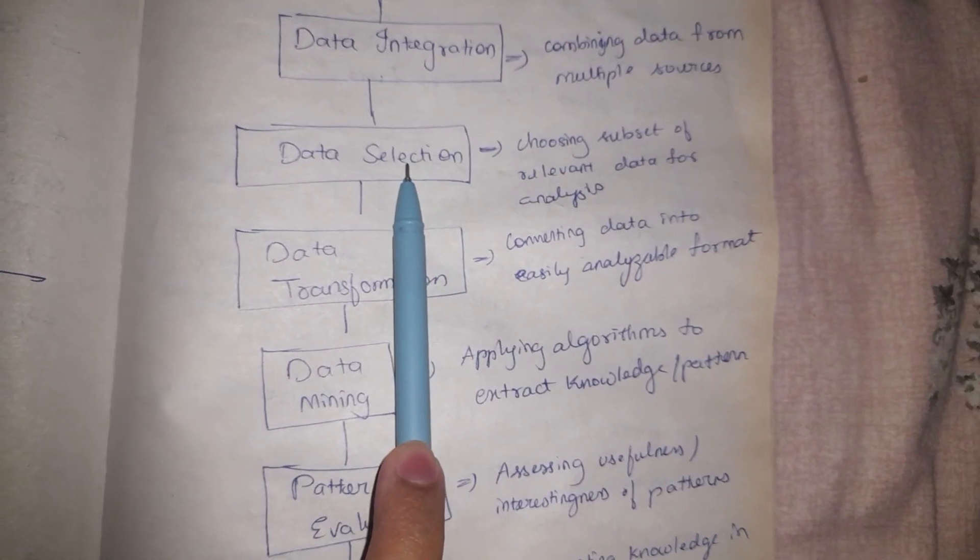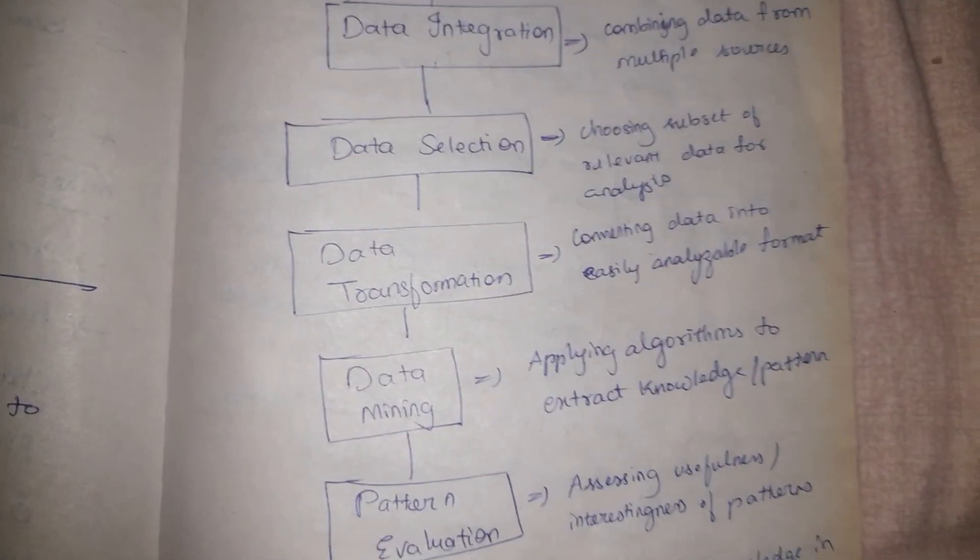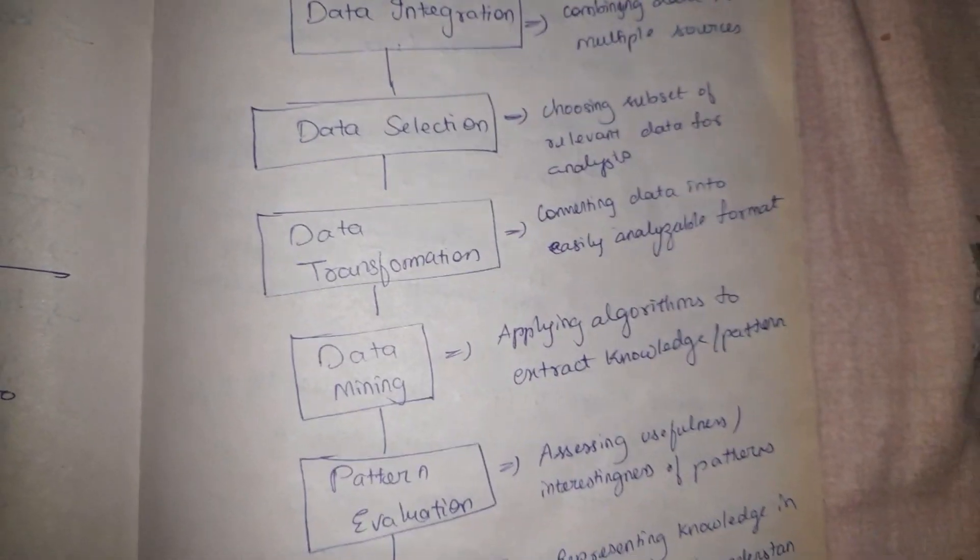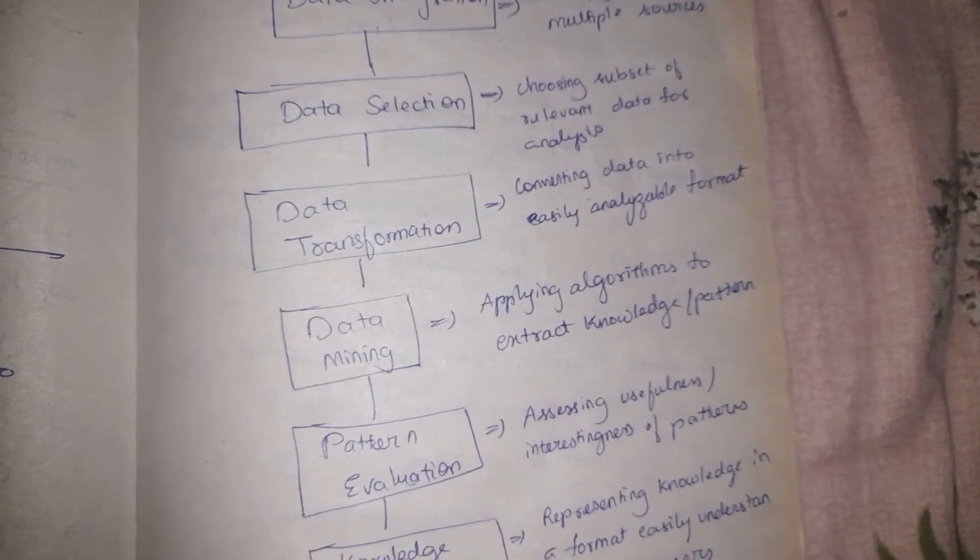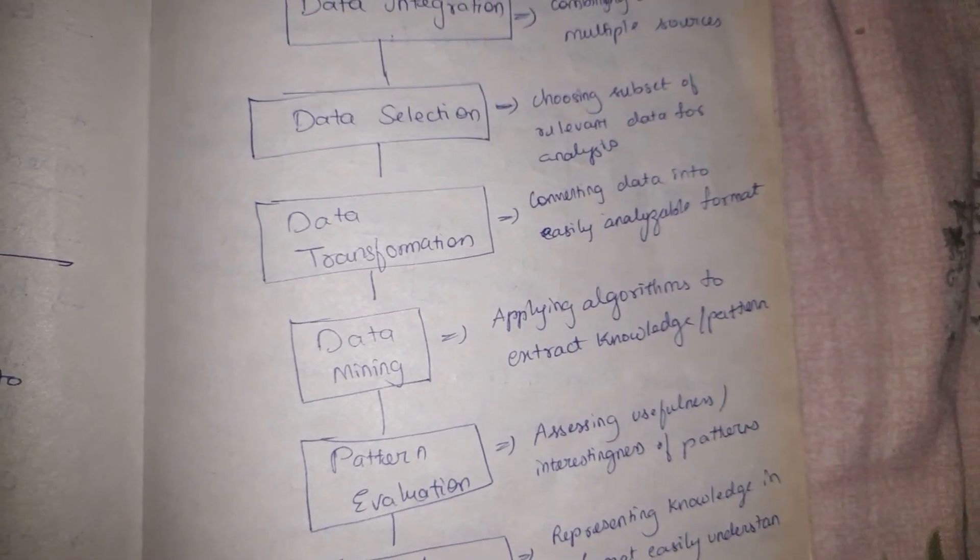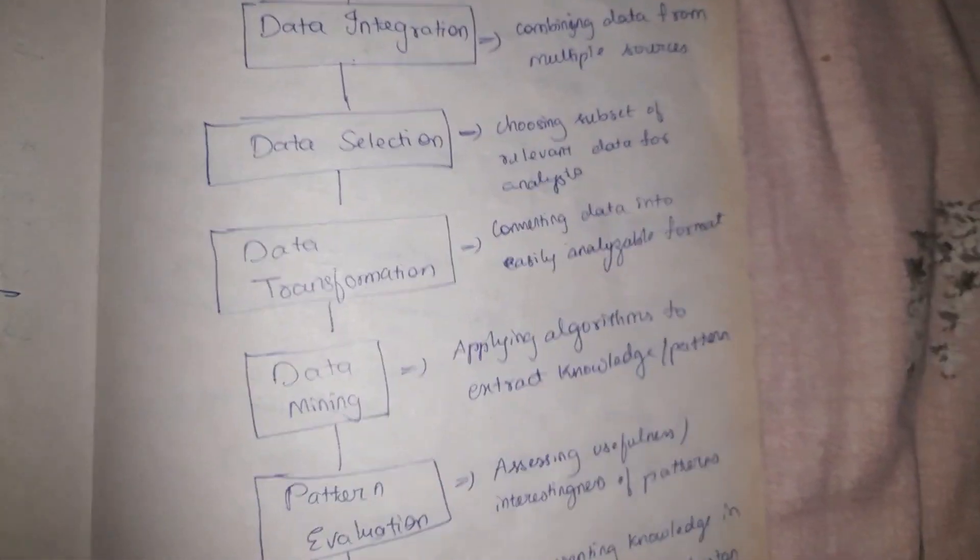Data selection basically means we are looking for what is relevant. We have gathered data from multiple sources, right? So we are selecting the data which will be more relevant to us so that we can investigate it further.